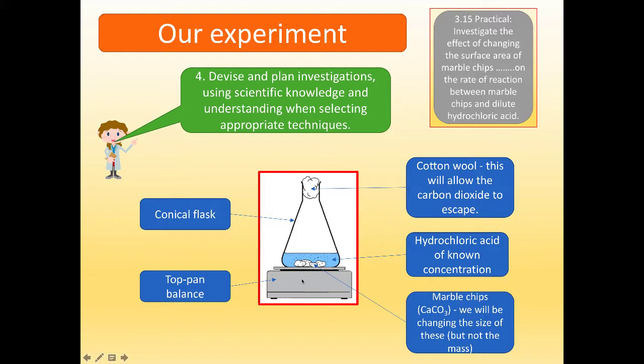Now, cotton wool is important. Because cotton wool will allow carbon dioxide to escape. You could say, why have it in there at all? Well, the acid may splash during the reaction. So it's a safety thing, really. Keep cotton wool in there. Why do you not use a rubber bung? Well, a rubber bung, the pressure will build up and eventually pop out the top. So you have to use cotton wool.